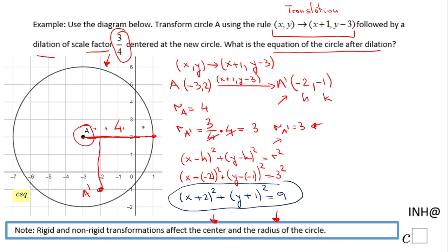This is the equation of the circle A after we translate using this rule and we dilate it by a scale factor of 3/4 centered at the new circle.